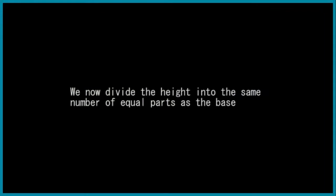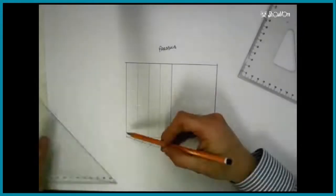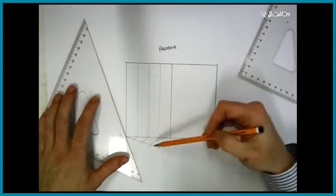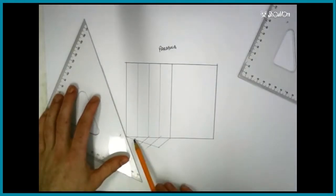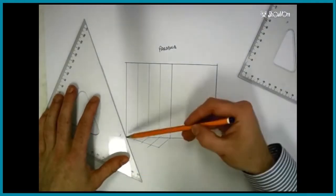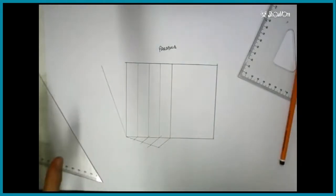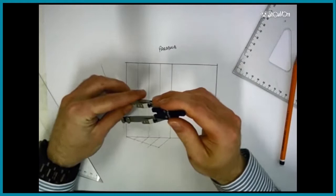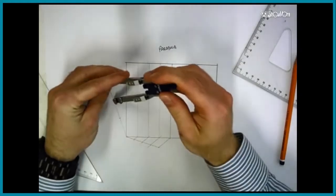Now we must divide the height of the parabola into the same amount of parts that we used for the base. So if you remember, four would be the amount that I divided the base into. So in this case I will divide the height of the parabola into four parts also. Again, we will use the division of a line method to do this.